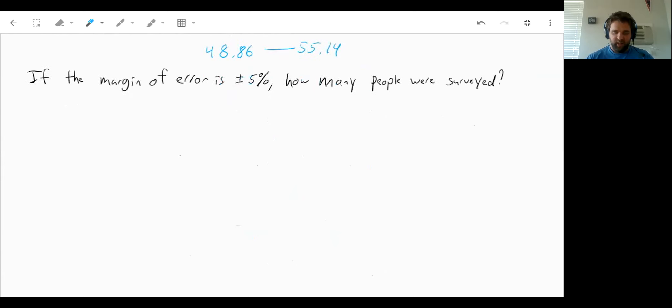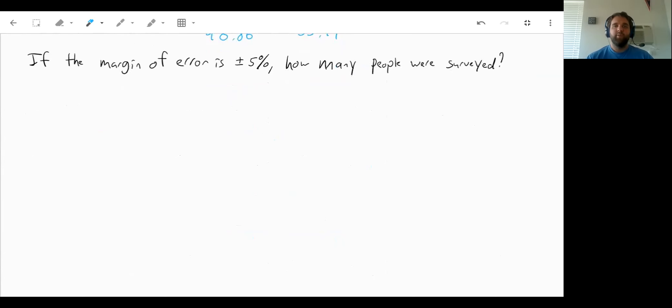So the other thing we can do is we can work backwards. So if the margin of error is plus or minus 5%, we can then figure out how many people were surveyed. So if it was plus or minus 5%, let's first convert that to a decimal so it would be plus or minus 0.05 which is going to equal 1 over the square root of n. Well, we can now multiply both sides by the square root of n and divide by 0.05.